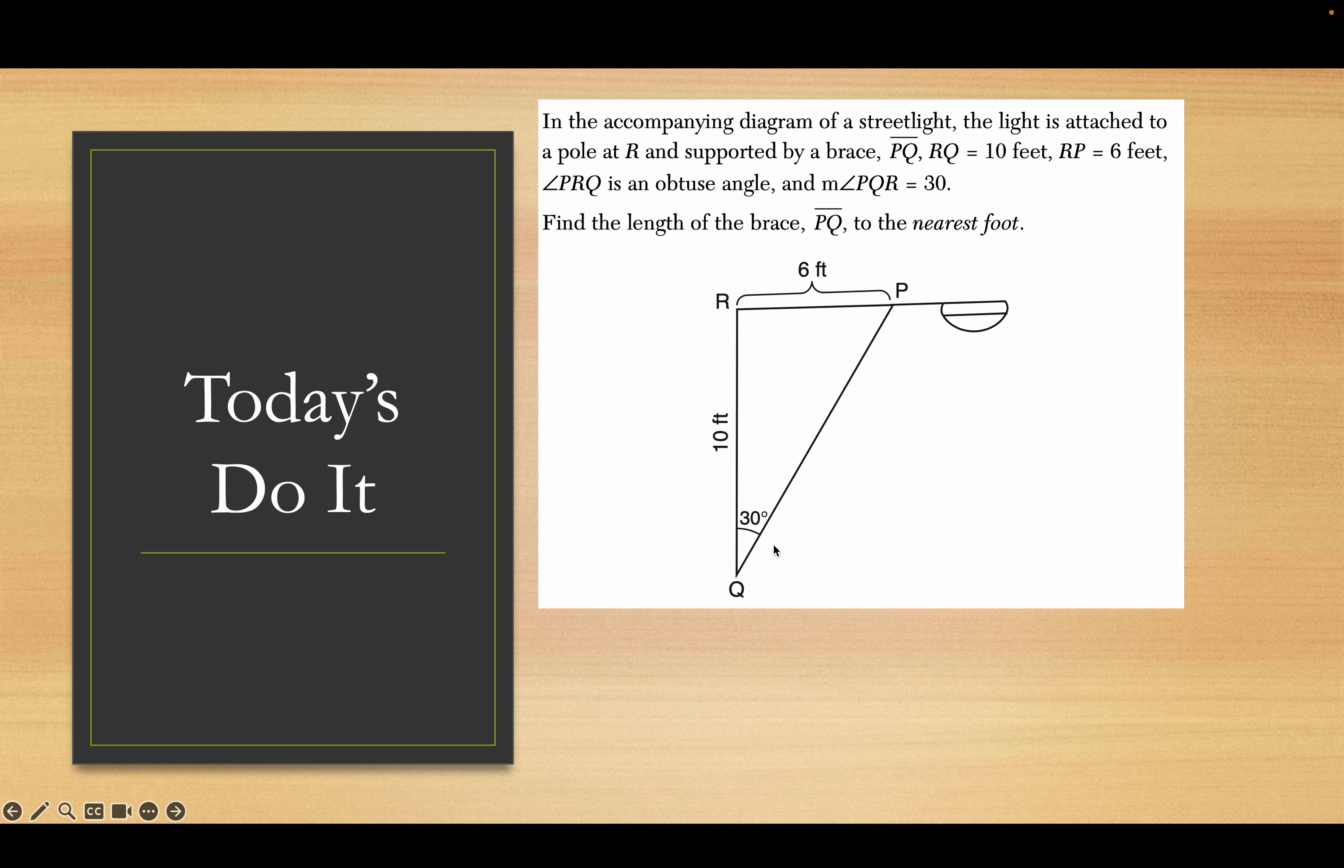With the 30 degrees I can use either sine or cosine, but I'm going to use the opposite being 6 because that's across from it, and PQ is the hypotenuse. The sine of 30 is 6 over PQ. Sine of 30 is a half, so that's 6 over PQ. Cross multiply and I get 0.5 times PQ is 6, then divide both sides by 0.5 and I get 12.